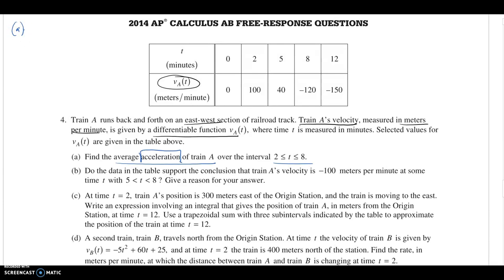Once we see an average, that's going to be average value or average rate of change. We were given velocity, so it can't be average value. And acceleration is the rate of change for velocity. So for part A, we're going to use our average rate of change formula. Our function evaluated at the right endpoint minus our function evaluated at the starting point all over the difference between the two input values. Go ahead and pull those values off the table. We have negative 120 minus, at two it is 100, all over 8 minus 2 or 6.